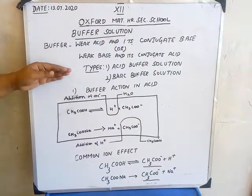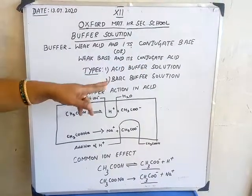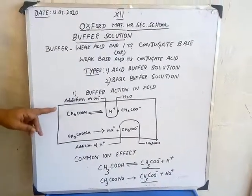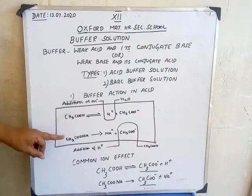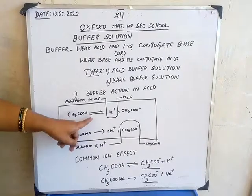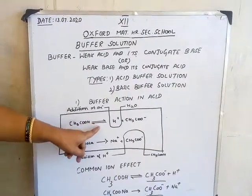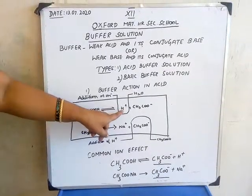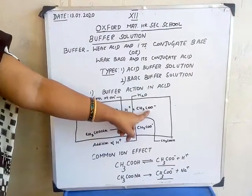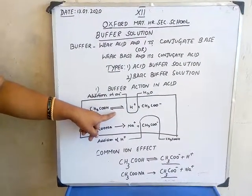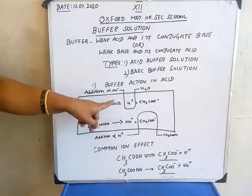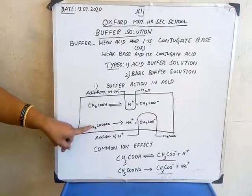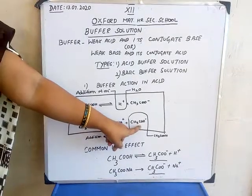Now let us discuss the types of buffer solution: acid buffer solution and basic buffer solution. For buffer action in acid, we are taking weak acid and its conjugate base. Weak acid will dissociate partially, that is why a reversible sign is there. On dissociation of acetic acid, it gives H⁺ plus CH₃COO⁻ — the acid is partially ionized. Next, sodium acetate is dissociated to sodium ion and acetate ion — it will ionize completely.